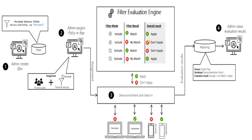This is very easy to understand when we do the practical demo in the Intune console. After you assign your filter, what happens is it goes to the device enrollment and check-ins. At that stage, the result is either 'do not apply' or 'applied', depending on what type of filter you created. In our example, we created a personal device filter and excluded personal devices.